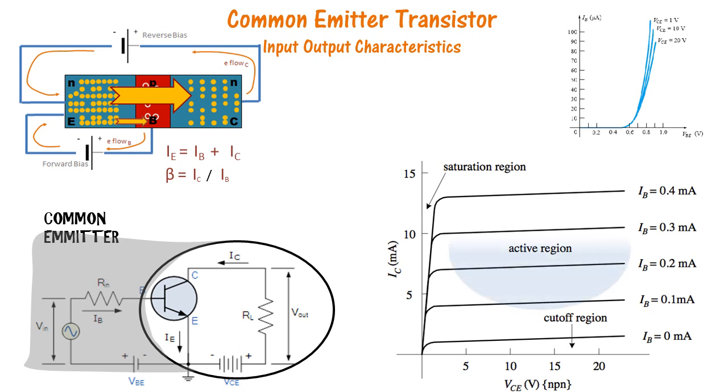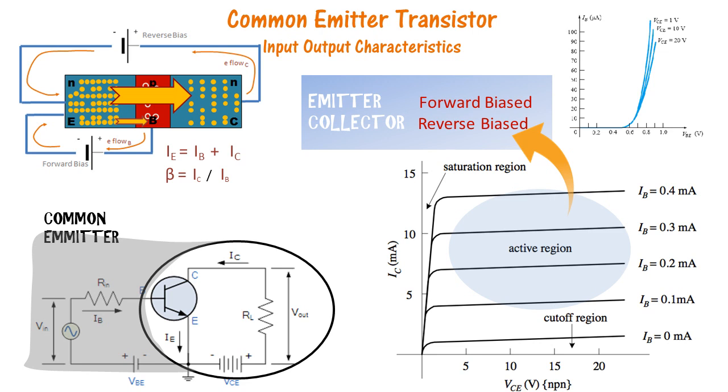What we notice in the active region is that the emitter is in a forward bias situation and the collector is in a reverse bias situation, which is the common expectation. Here we see large amplification of the base current.